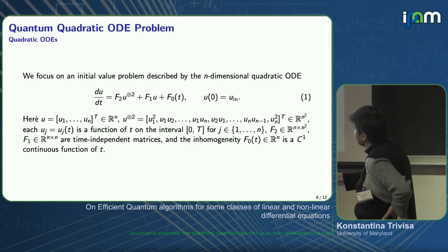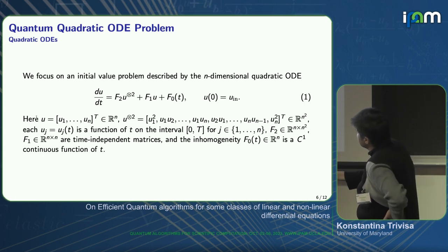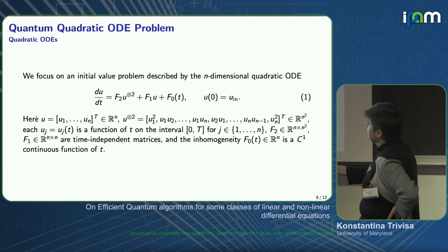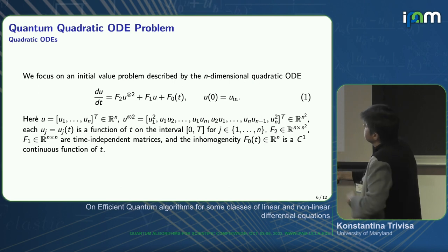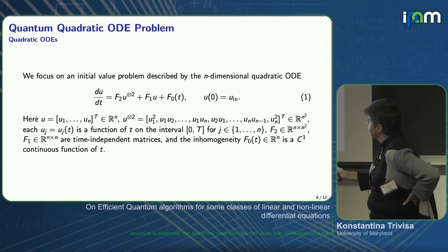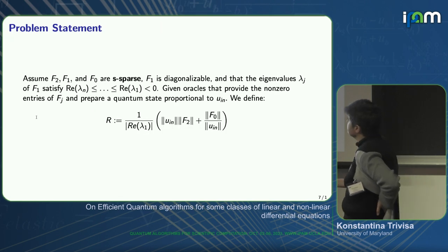The first result involves a nonlinear system. We consider the n-dimensional quadratic ODE problem: du/dt equals a quadratic form. Here F2 is a linear operator acting on two copies of u; F1 is a diagonalizable, time-independent matrix acting on u; and F0 is the inhomogeneity. We also have initial data provided.